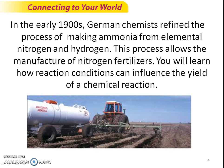This process allows the manufacture of nitrogen fertilizers. You will learn how reaction conditions can influence the yield of a chemical reaction. So this is called the Haber process, taking nitrogen and hydrogen, mixing them together to get ammonia, which is very useful for fertilizers and many other things. You're going to see this Haber reaction multiple times throughout this chapter.